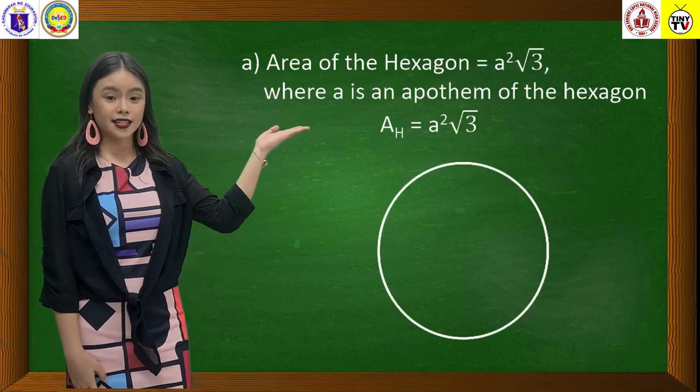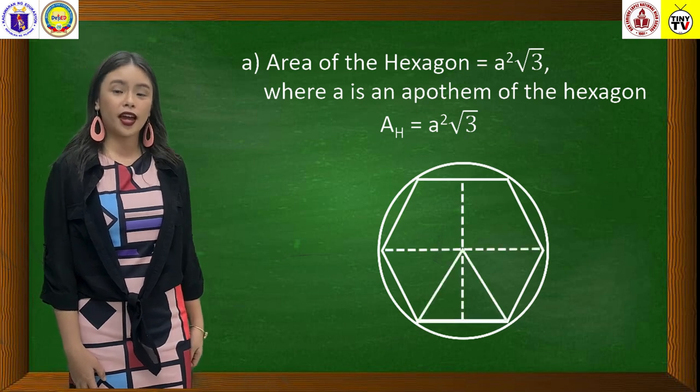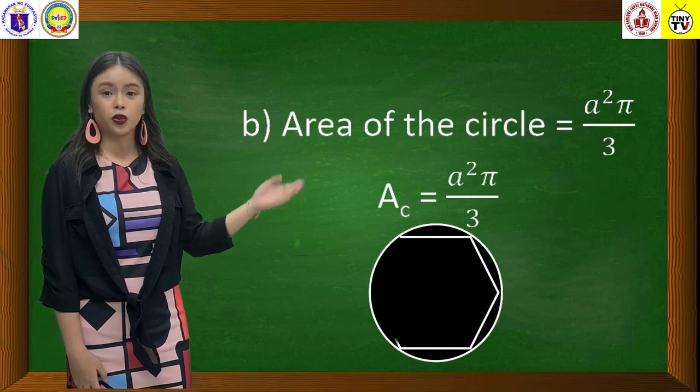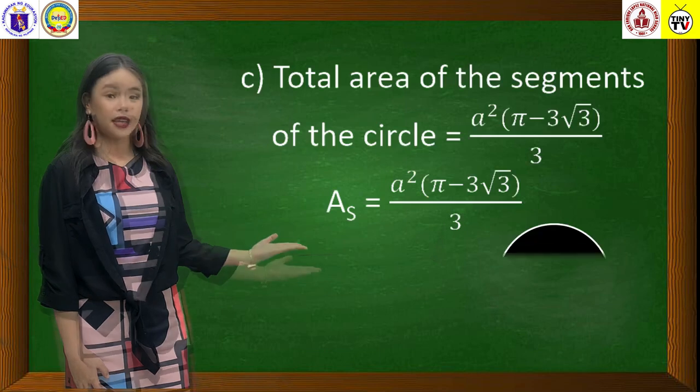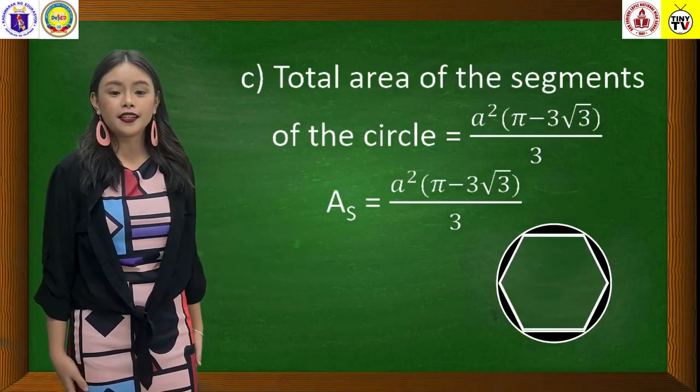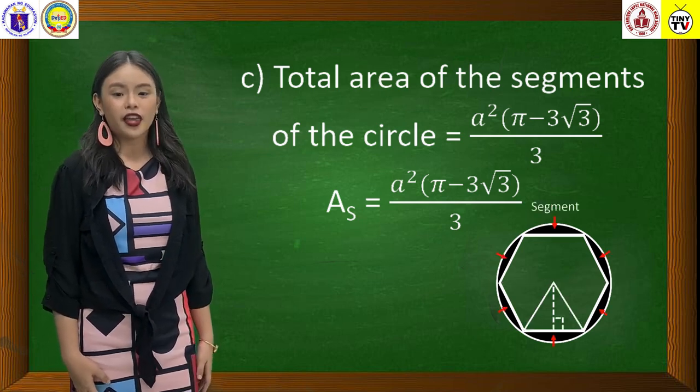A. Area of the hexagon is equal to a squared times square root of 3, where a is an apothem of the hexagon. B. Area of the circle is equal to a squared pi over 3. And C. Total area of the segments of the circle is equal to a squared times the quantity of pi minus 3 square root of 3 over 3.